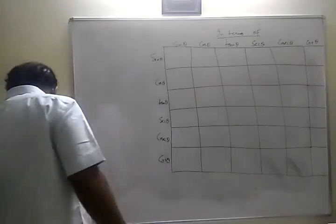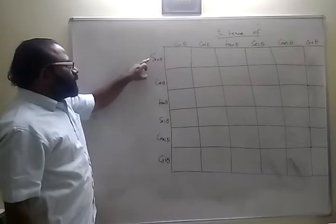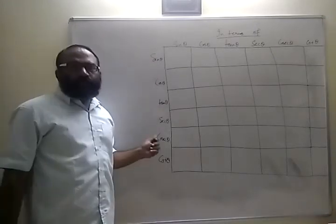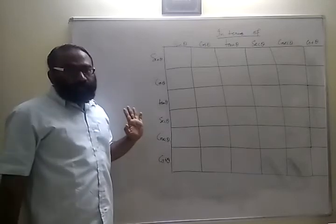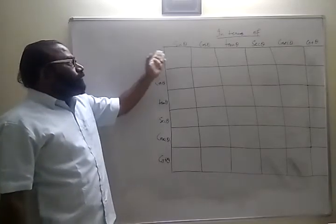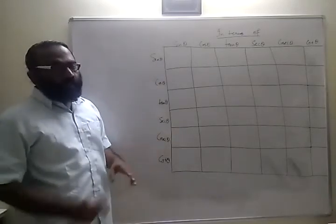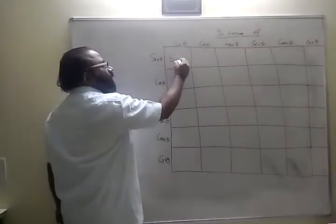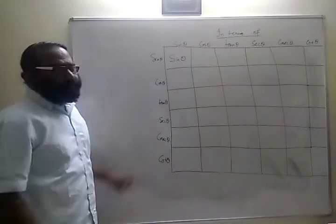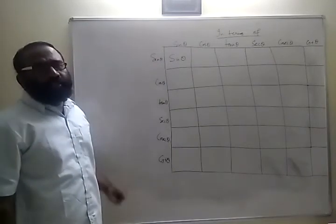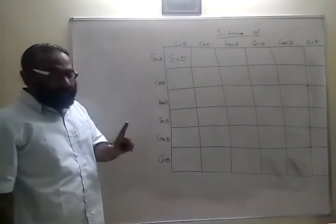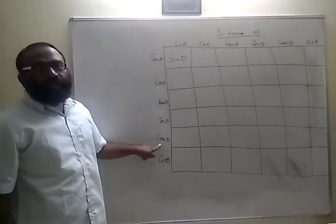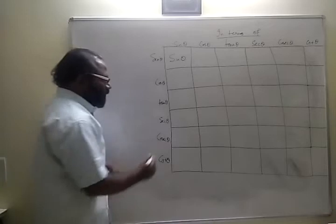We have all these ratios: sine theta, cos theta, tan theta, secant theta, cosecant theta, and cot theta — and we need to write all of them in terms of sine theta. Sine theta in terms of sine theta is just sine theta itself. Cosecant theta is 1 by sine theta.